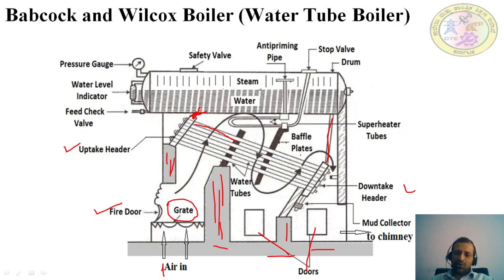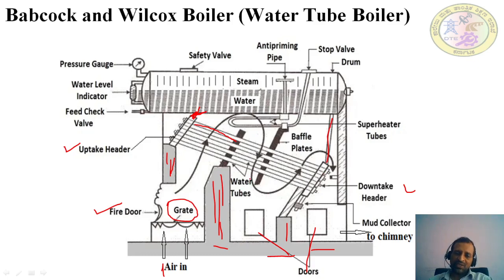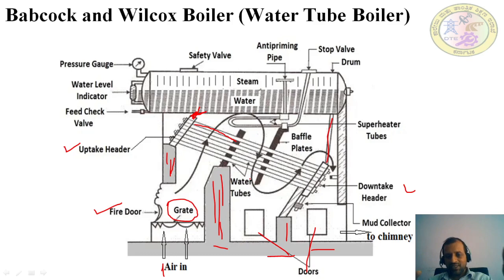Baffle plates are placed here to change the direction of the flow of the flue gases. When the flue gases flow in a zigzag manner, the time they spend in contact with the water tubes is longer, resulting in better heat transfer. To make the flue gases flow in this zigzag manner, baffle plates are placed in between.